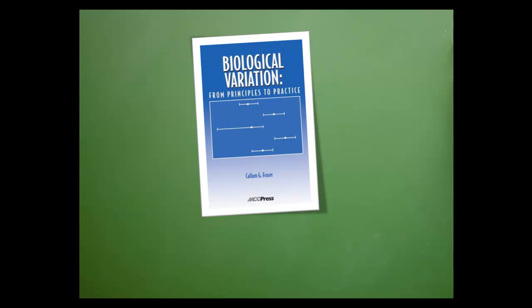We'll need two pieces of information: published within biological variation data, or CVW, and the lab's chosen performance goal.